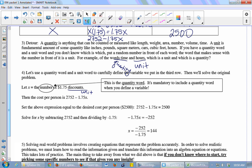So now I'm going to solve the problem. The cost per person is $2,752 minus $1.75X. And I want to know when that is going to equal $2,500. So I set the expression for the cost equal to $2,500, and I'm going to solve for X.